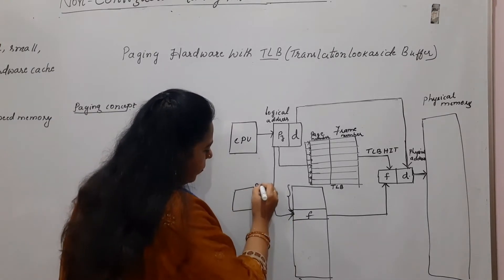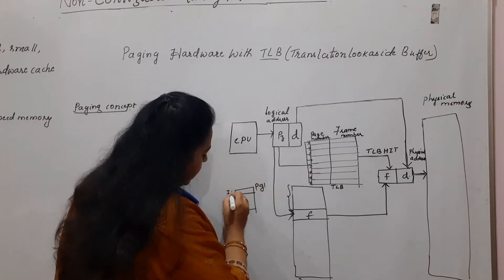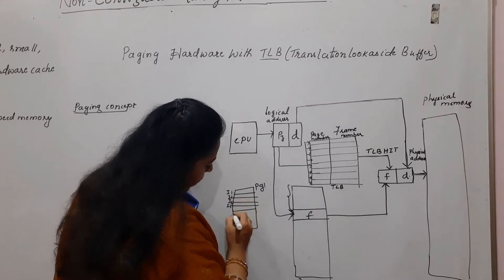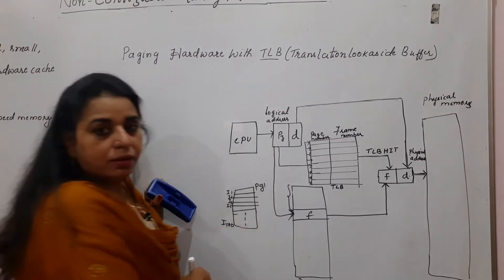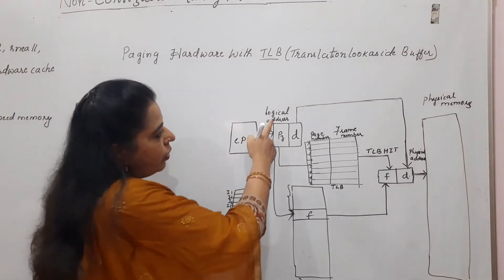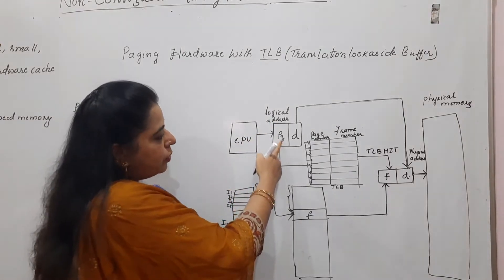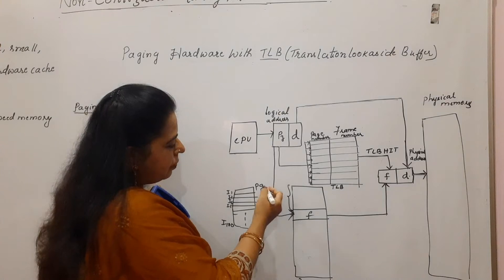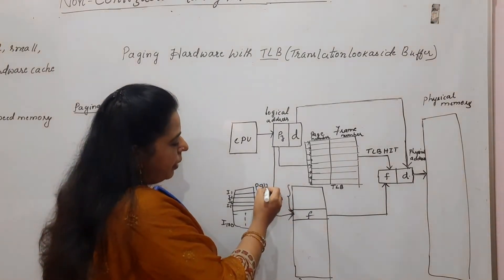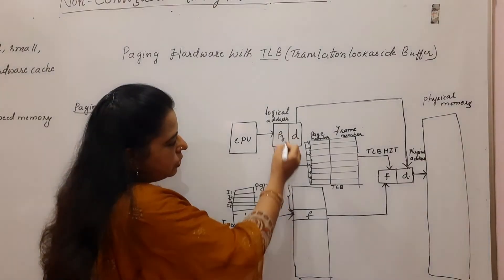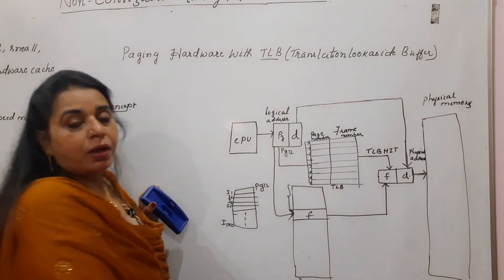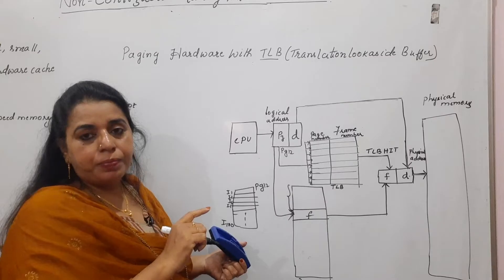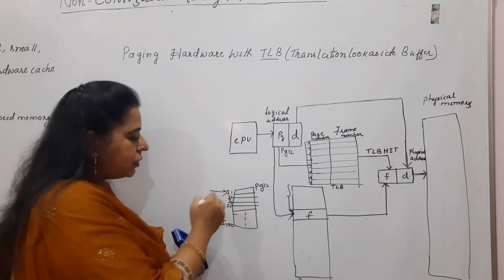Suppose there is a particular page — page 12 — and it contains 100 instructions. Whenever the CPU generates a logical address for page 12, it searches page 12 in the page table to find the corresponding frame number, so that it can fetch the instruction. If it is executing instruction I1, and then I2, and then I3 — all belonging to page 12 — the process of searching page 12 in the page table and finding the frame number gets repeated for each instruction.